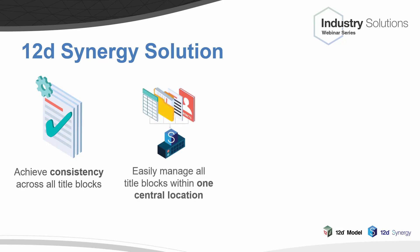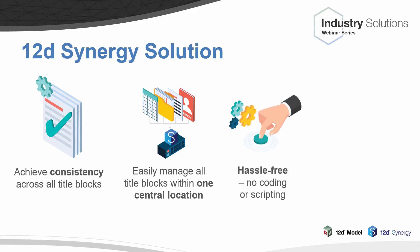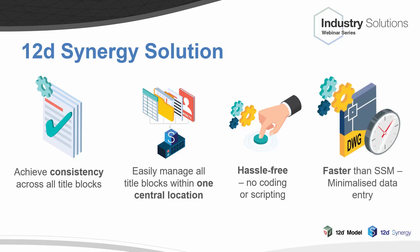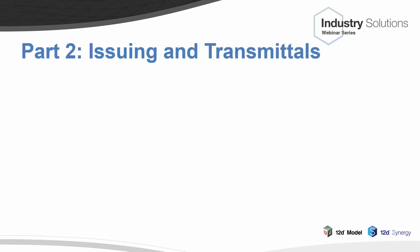12D Synergy allows you to achieve consistency across all your title blocks. It lets you easily manage all your title blocks within one central location - your drawing register. It's hassle-free and super easy to use, without the hassles of coding, running scripts, or creating and maintaining your own CSV file. It's also much easier, faster, and safer than Sheet Set Manager because our drawing register minimizes data entry.